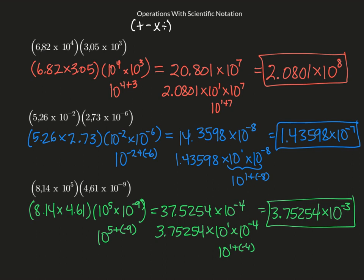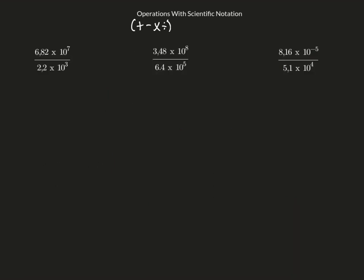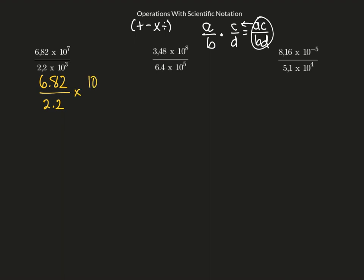Let's do some division. With multiplying fractions, a over b times c over d equals ac over bd — we're starting with a combined fraction and separating it. So with the first problem, I break it up into 6.82 over 2.2, times 10 to the 7th divided by 10 to the 3rd. When we divide powers with the same base, we subtract their exponents. Dividing the first part on the calculator gives me 3.1, so the answer is 3.1 times 10 to the 4th.